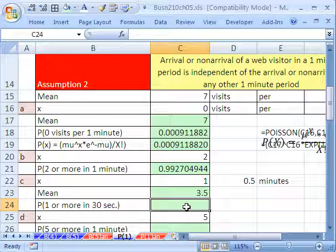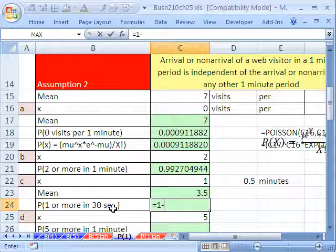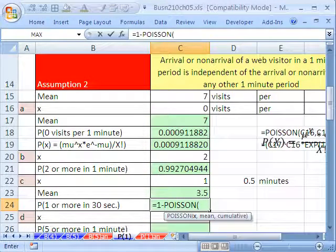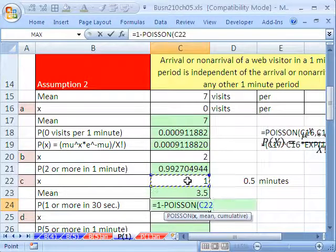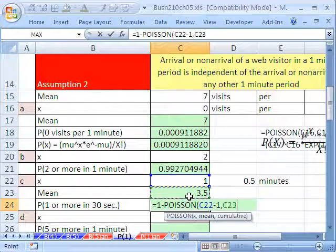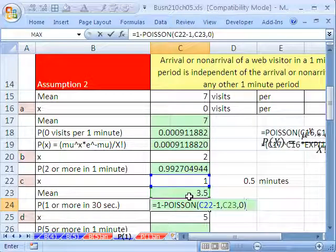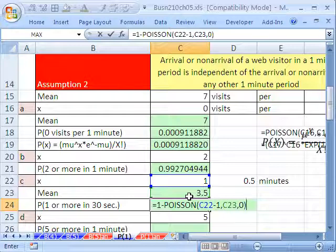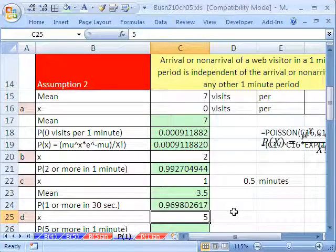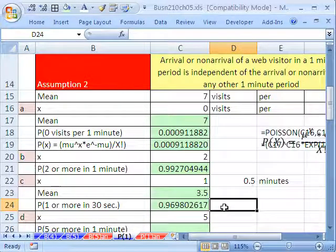And this is 1 or more. So 1 or more will say equals 1 minus. Now, think about this. This is 1 or more. The only number below 1 is 0, so we don't even have to do cumulative. We'll use our complement rule. 1 minus Poisson will say x is that minus 1, to get us to 0, comma, the mean is going to be our 3.5. And then cumulative, we can put 0 because there is only 1. Actually, in this case, 1 or 0 would give you the same answer here because there is only one probability associated with that 0. And then you hit Enter. That's the probability of getting 1 or more in 30 seconds.